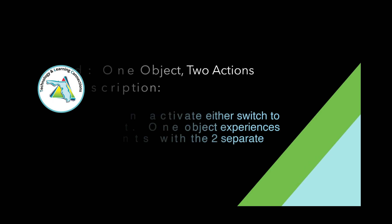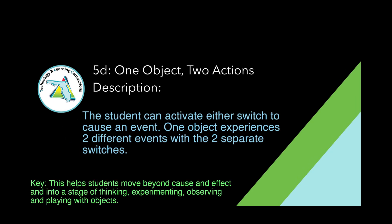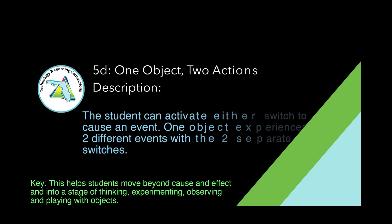On our Level 5D, One Object, Two Actions, we are able to see that a student can activate either switch to cause an event. One object experiences two different events with the two separate switches. The key feature at this level is that it helps students move beyond cause and effect and into a stage of thinking, experimenting, observing, and playing with objects.